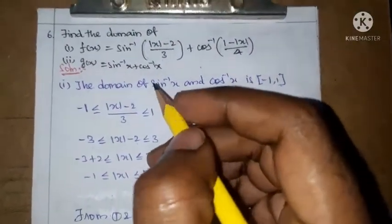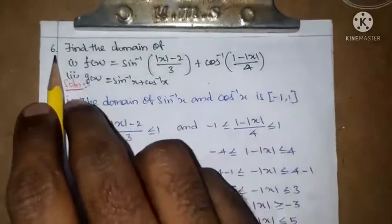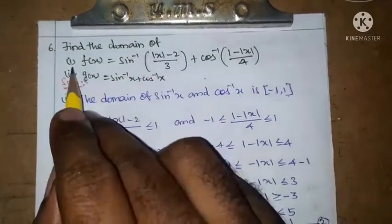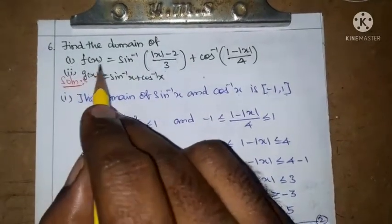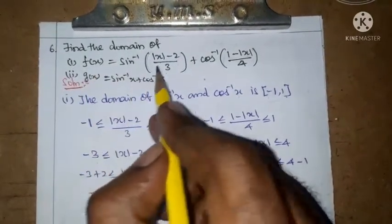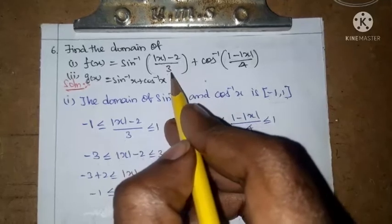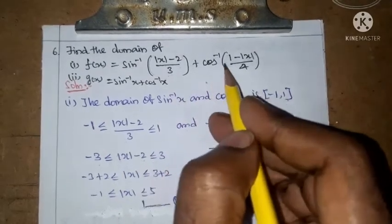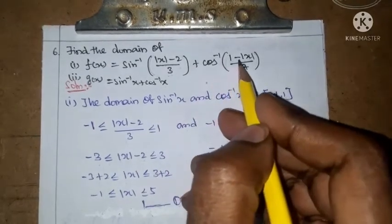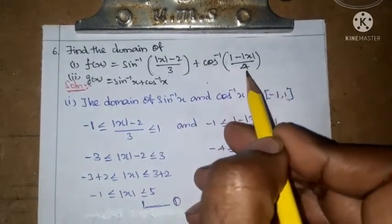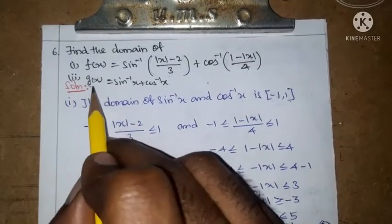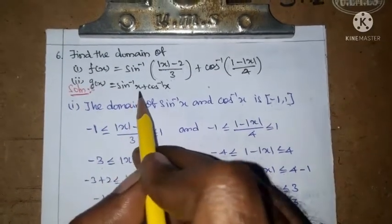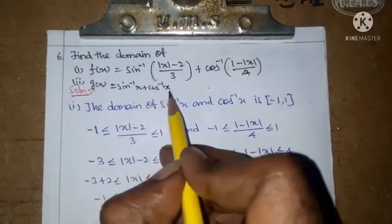Exercise 4.2, question number 6. Find the domain of: first sub-part, f of x equal to sin inverse of modulus of x minus 2 divided by 3, plus cos inverse of 1 minus modulus of x by 4. Second sub-part, g of x equal to sin inverse x plus cos inverse x.